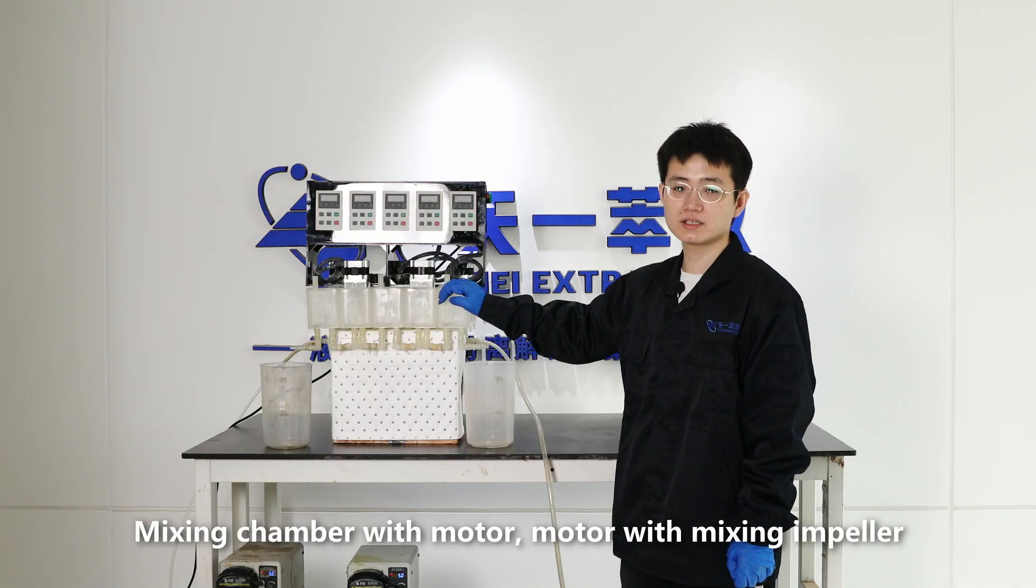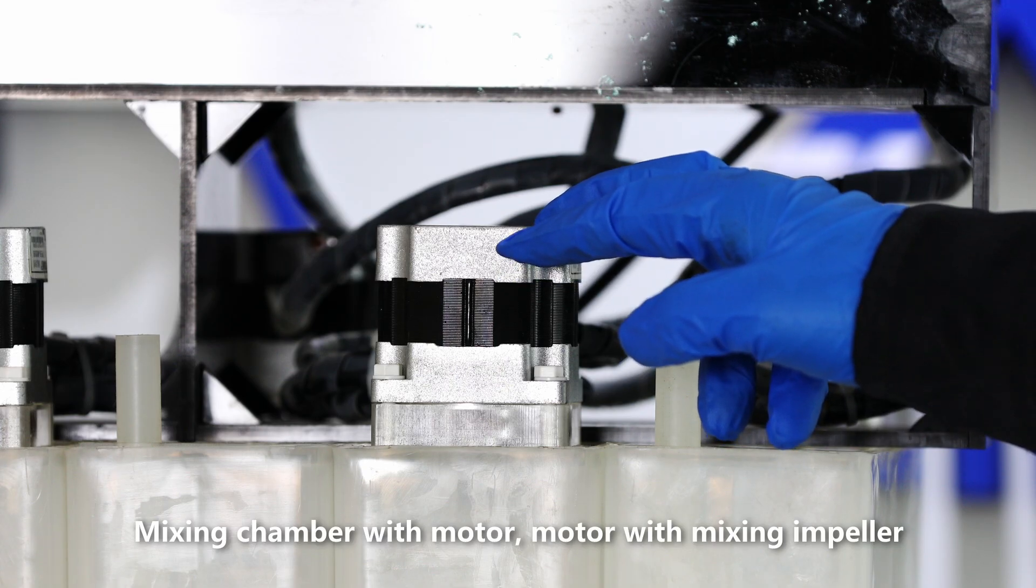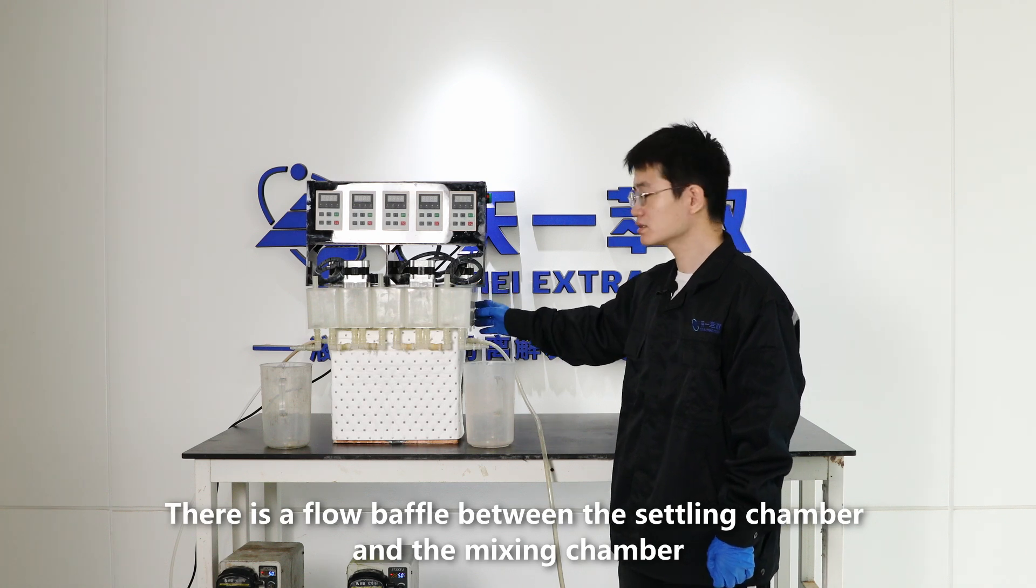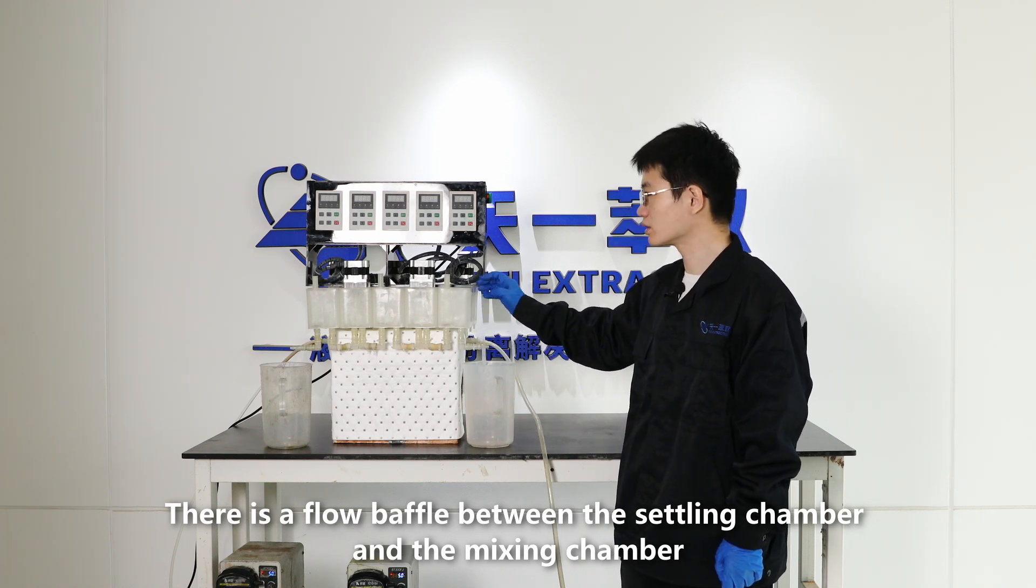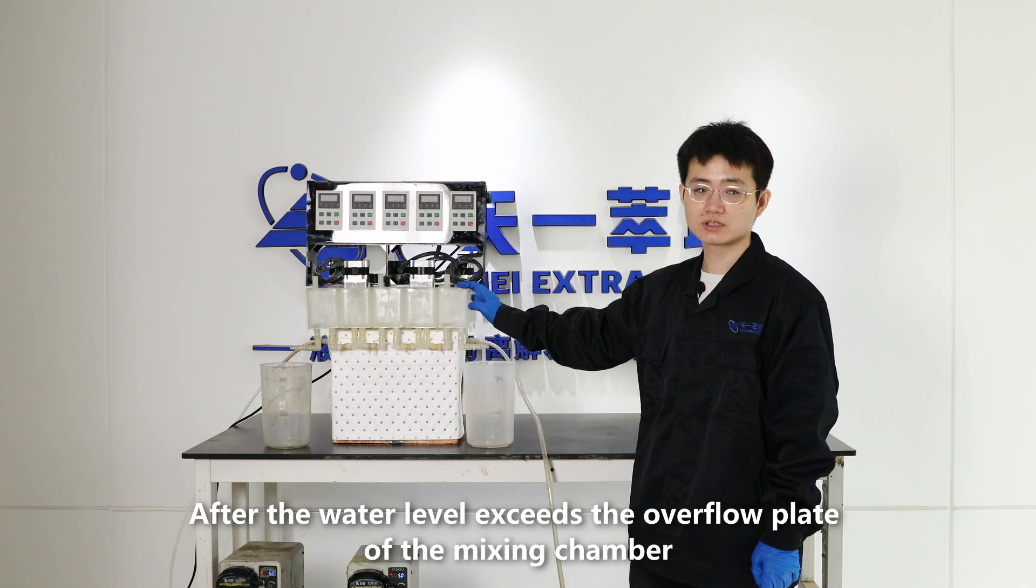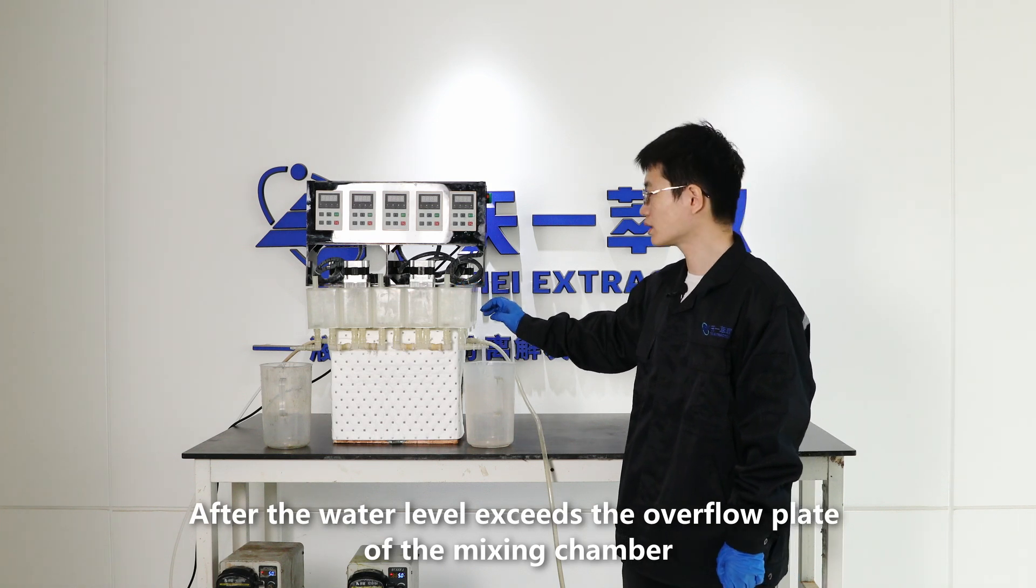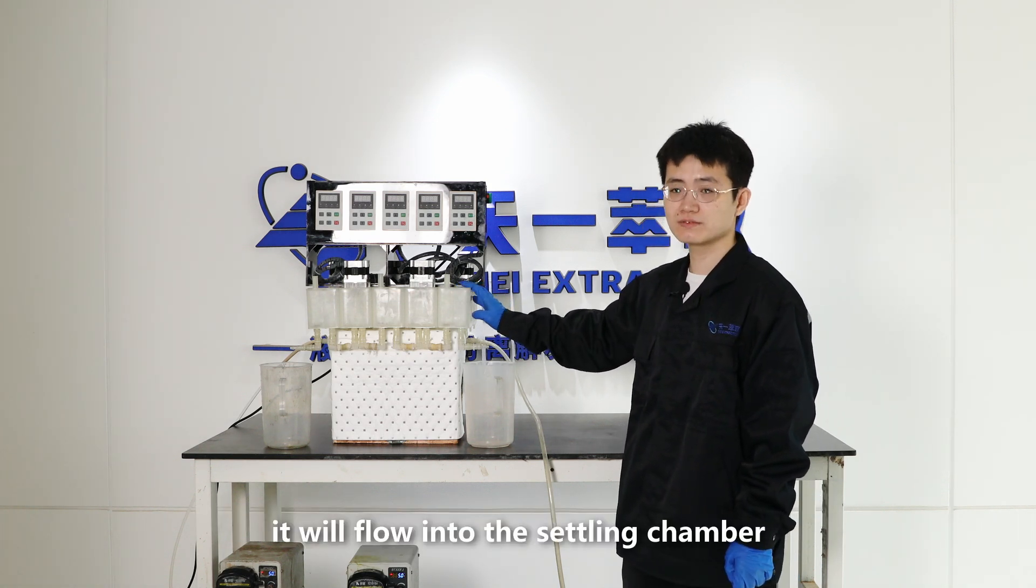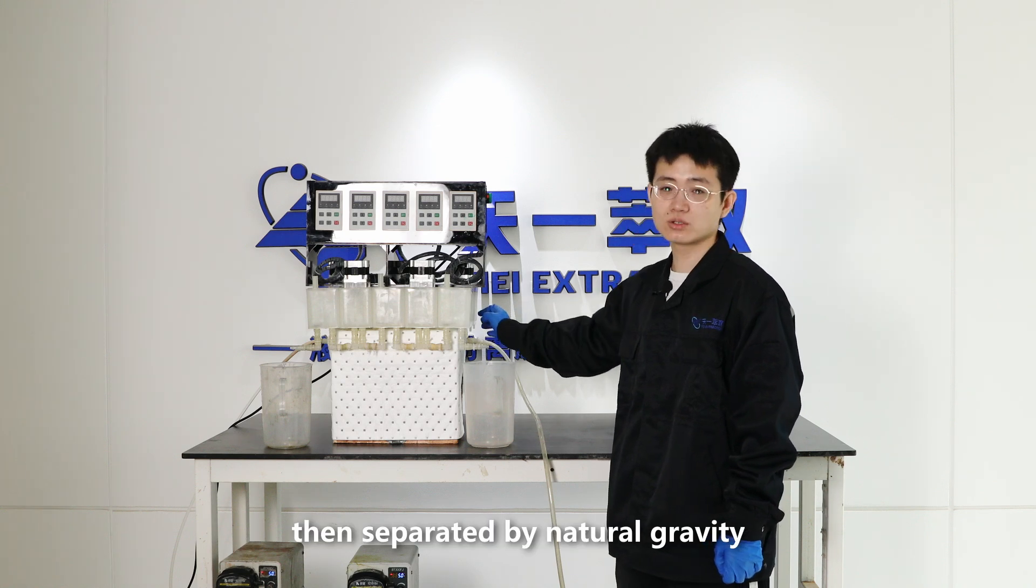The mixing chamber has a motor with mixing impeller. There is a flow baffle between the settling chamber and the mixing chamber. After the water level exceeds the overflow plate of the mixing chamber, it will flow into the settling chamber, then separated by natural gravity.